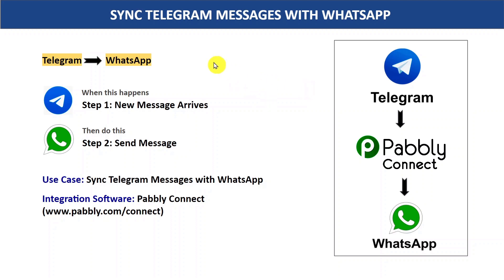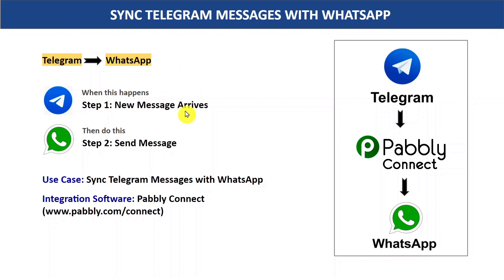Hey everyone, in this video we are going to learn how you can send Telegram messages to WhatsApp automatically, or syncing Telegram messages with WhatsApp. As it is known that Telegram and WhatsApp don't have a direct connection. That's why we are going to integrate both of these applications with the help of an integration software that is Pabbly Connect, so that whenever a new message will arrive on Telegram, Pabbly Connect will automatically send the message on WhatsApp at the same time. This process requires no coding knowledge and any non-technical person can also do this easily. So let's begin.